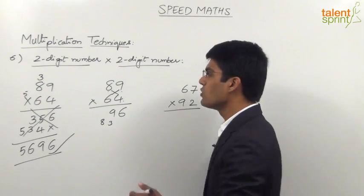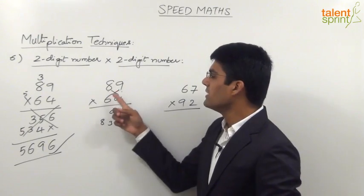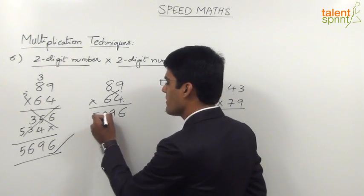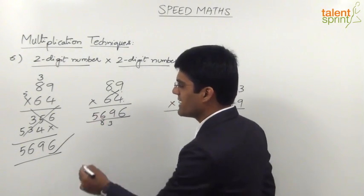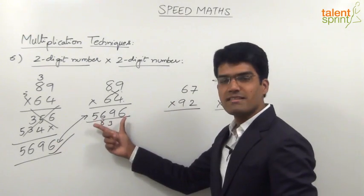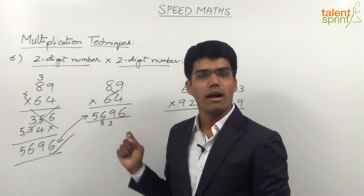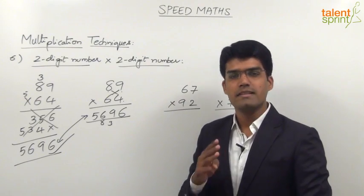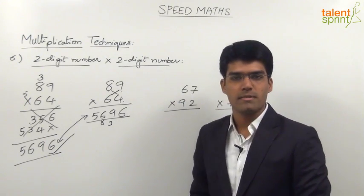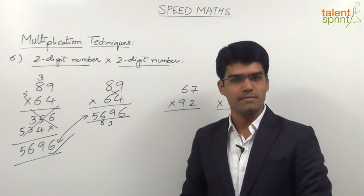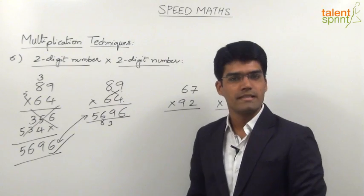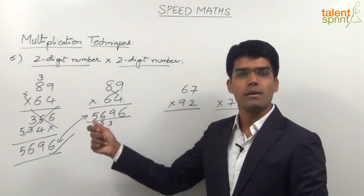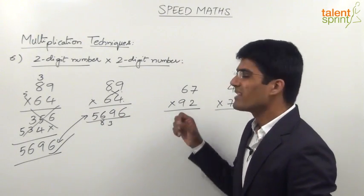The last step is to multiply both the tens places: 8 into 6 is 48. 48 plus 8 carry is 56. So the answer is 5696. Comparing with the general method, 5696 has been obtained without writing the intermediate steps. That is the advantage of this technique. The three simple steps are: first multiply both units places, second cross multiply units with tens places, and third multiply the tens places. In each step we take only one digit in the answer and the other digit gets carried forward.